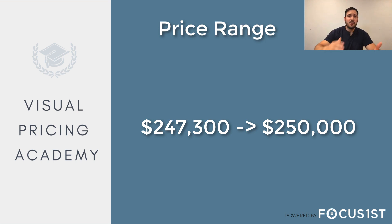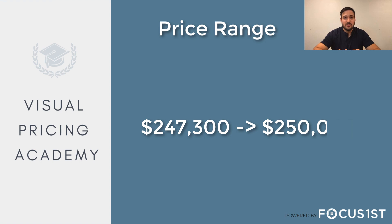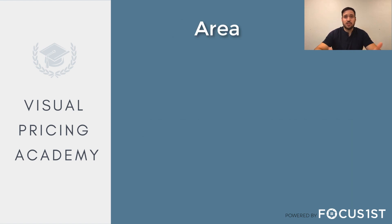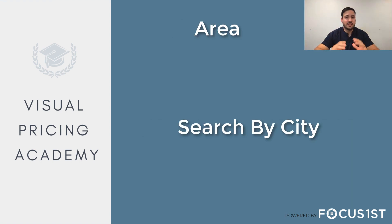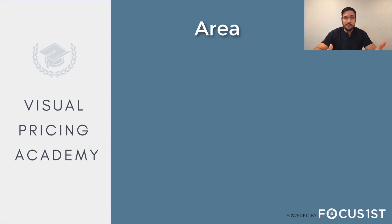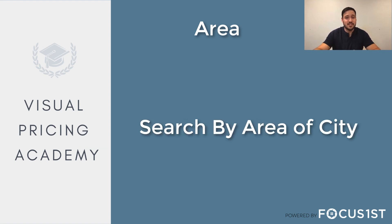Once we have this price range from the bottom bridge to the top bridge, we search our area for other competition that falls in that range. Most of the time that will just be citywide — you can type your city in and that's how we define the area of competition we're going against, because in most cases that's where buyers will be looking. That said, there are options to zoom in and pick an area of the city.